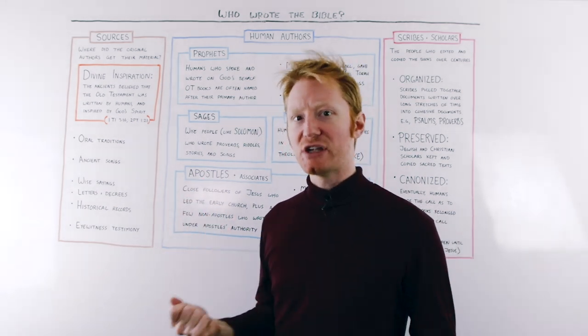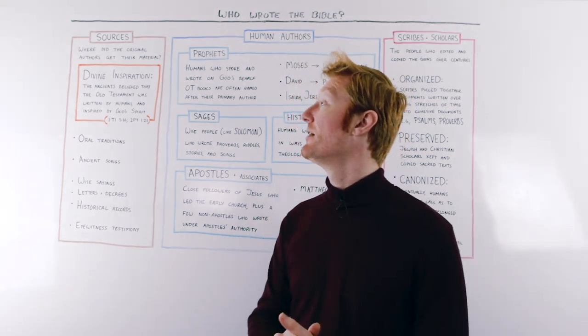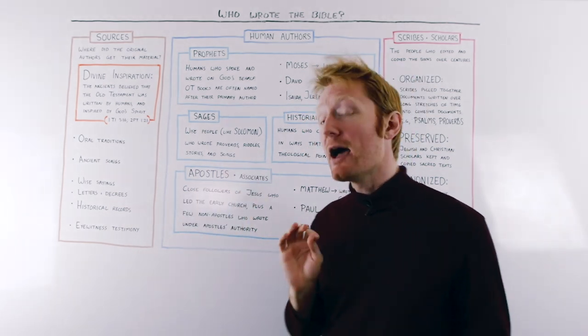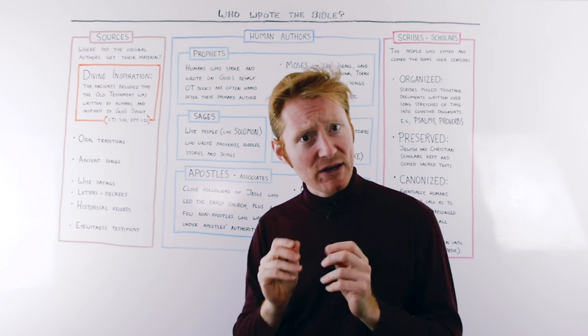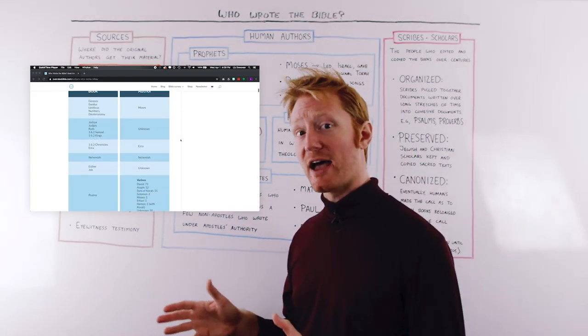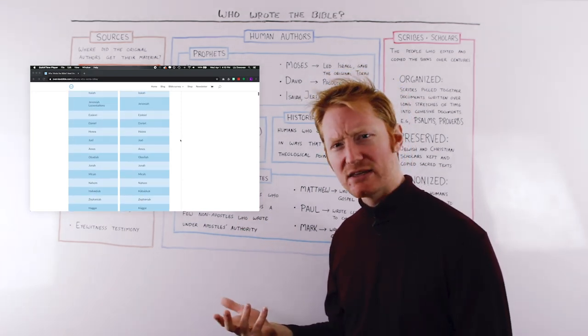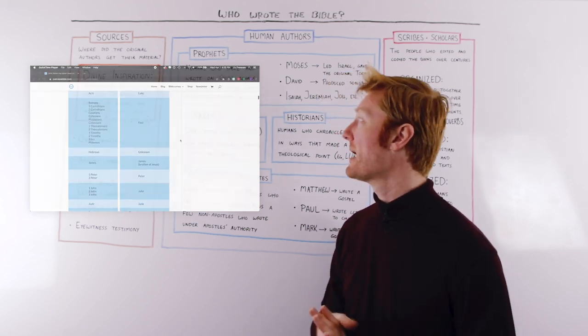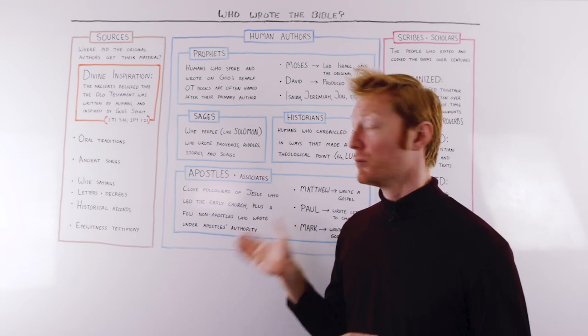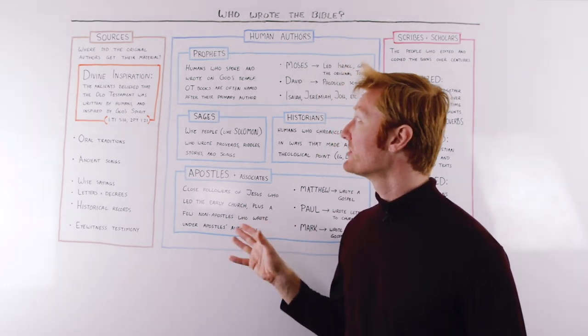So these are the sources. This is some of where the people that wrote the Bible were drawing from. Obviously, the chief one, the most important one to the religious side of biblical discussion, is that divine inspiration. Now, let's look at the human authors of Scripture. I'm not going to get into the list of all 35 authors of the Bible that are traditionally associated with these books, but you can find that list on overviewbible.com. What we want to get an idea of is the roles of the people that contributed.